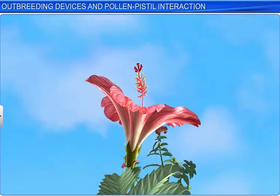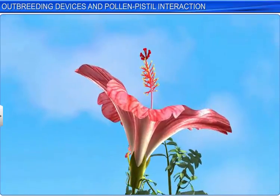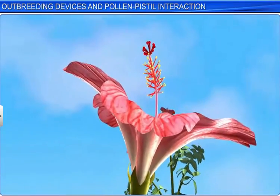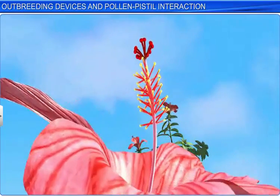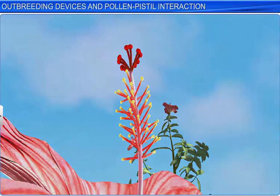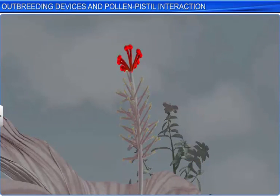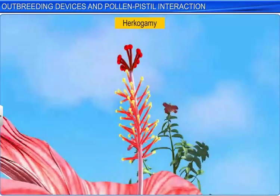In some plant species such as hibiscus, the anther and stigma are placed at different heights, which disallows self-pollination by preventing the pollen from falling onto the stigma. This condition is called herkogamy.